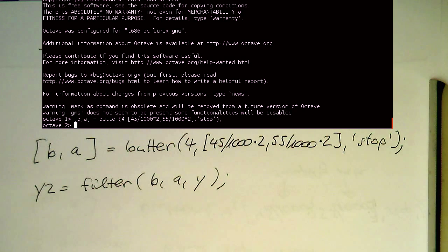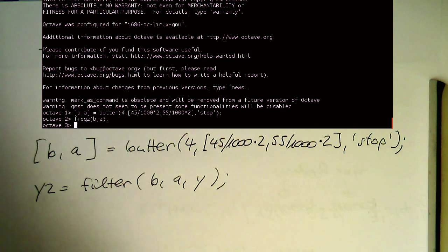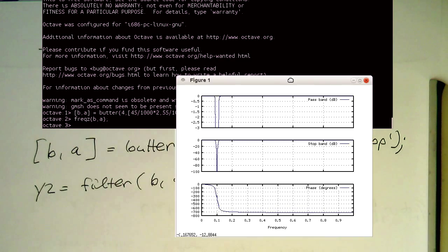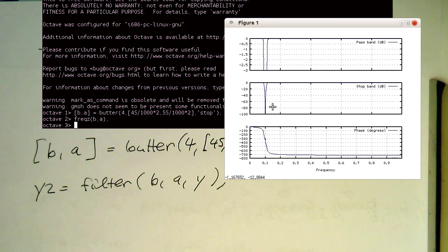So now we have created our Butterworth filter here. Let's see if this is doing what we want. Yeah, so we see here that we have a nice rejection here at 0.1. Remember Nyquist frequency in this case at a sampling rate of 1000 Hz is 500 Hz. And so then therefore here this fits so this is then 50 Hz here.